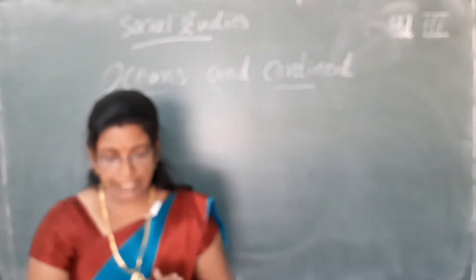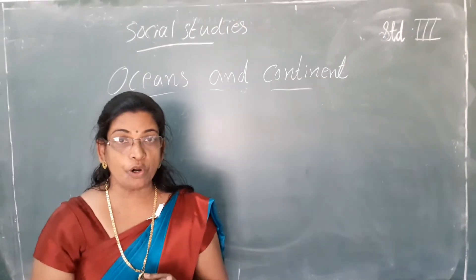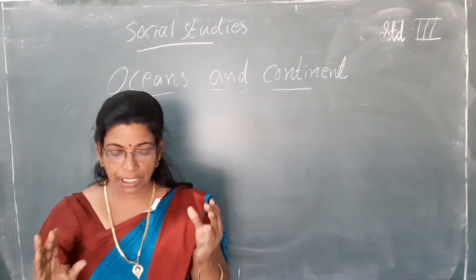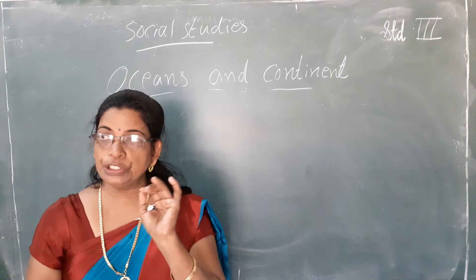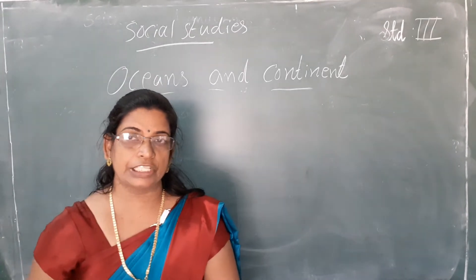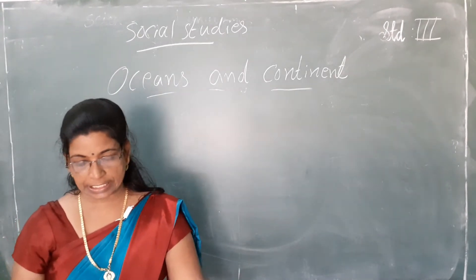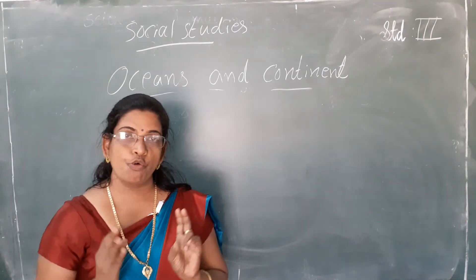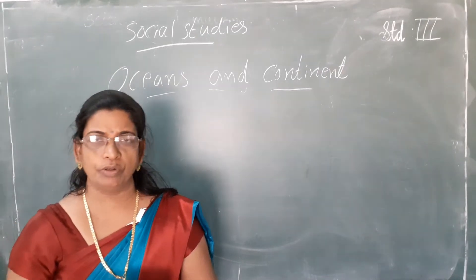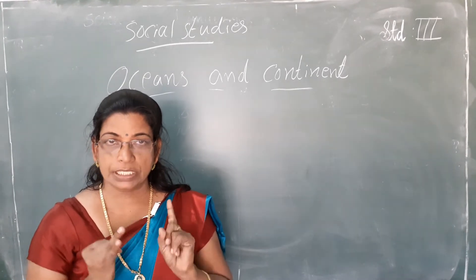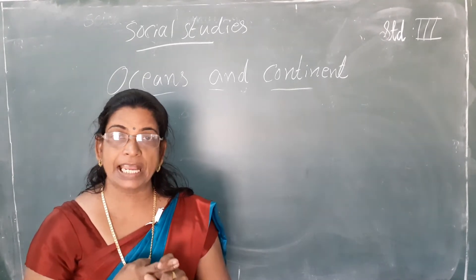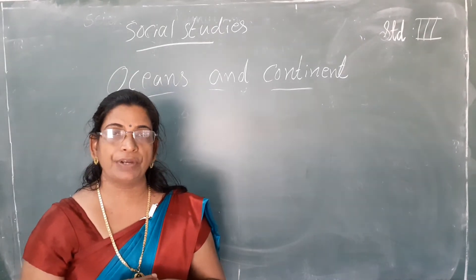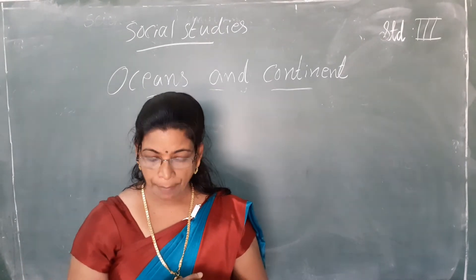To find a place on a map, we should know the four directions. If we want to find out a place we should know the four directions. Which are the four directions? North, South, East, and West. You should know all these four directions in order to find a place on the map or on a globe.